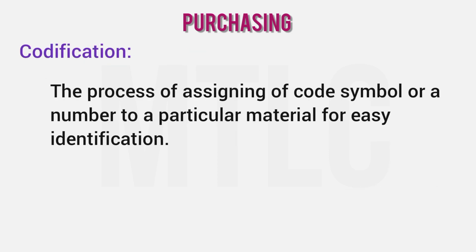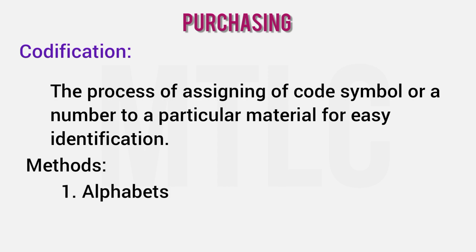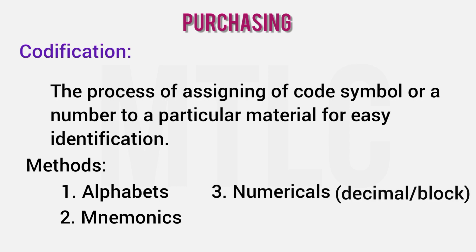Codification refers to how drugs are arranged in a pharmacy. Methods include: the alphabetical method (A or B); the mnemonic method, where abbreviations are used — for example, PAT for Paracetamol, CP for Chloramphenicol; the numerical method using decimal system and block system. In the decimal system, 10 represents Tablets, 10.1 is Paracetamol Tablet, 10.2 is Analgin Tablet. In the block system, numbers are reserved in ranges — for example, 1–50 for one category, 51–100 for capsules.